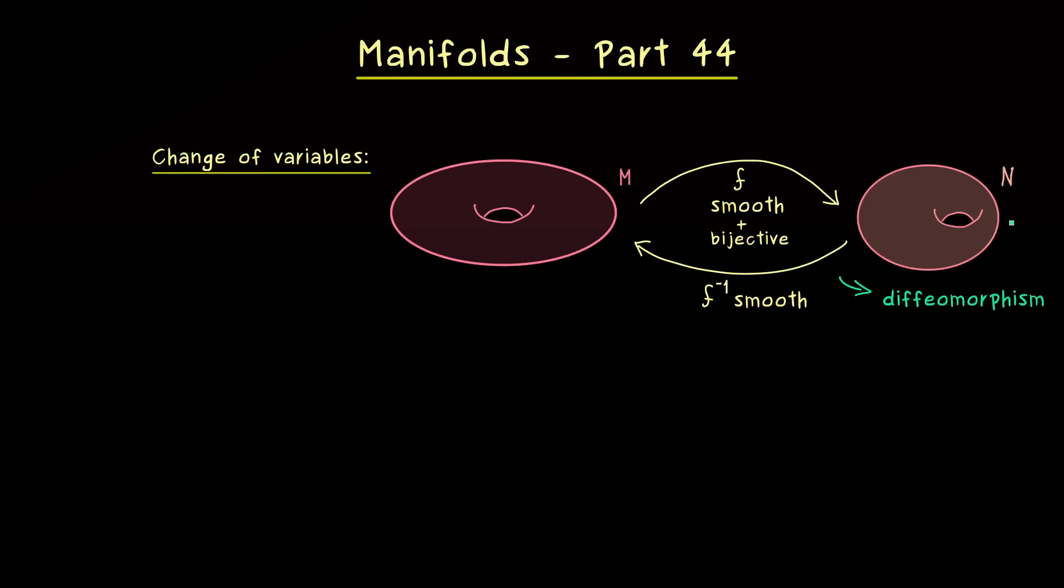So please remember that for the change of variables formula on manifolds we need a diffeomorphism. Okay, and then we can formulate the formula because we have two integrals, one on the left-hand side and one on the right-hand side. And maybe let's say that we fix a volume form on the right-hand side, so on the manifold N.